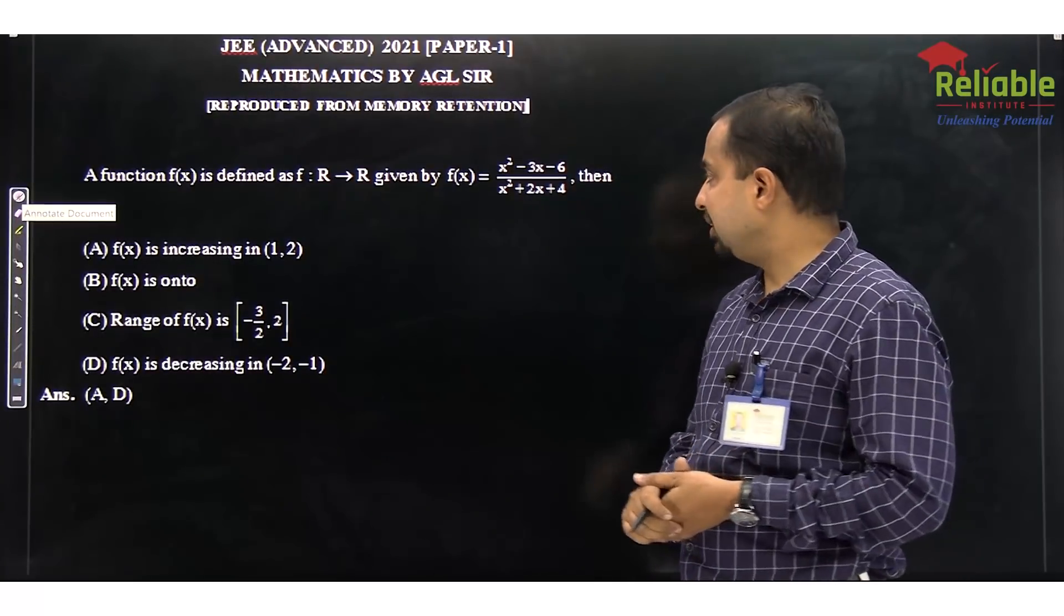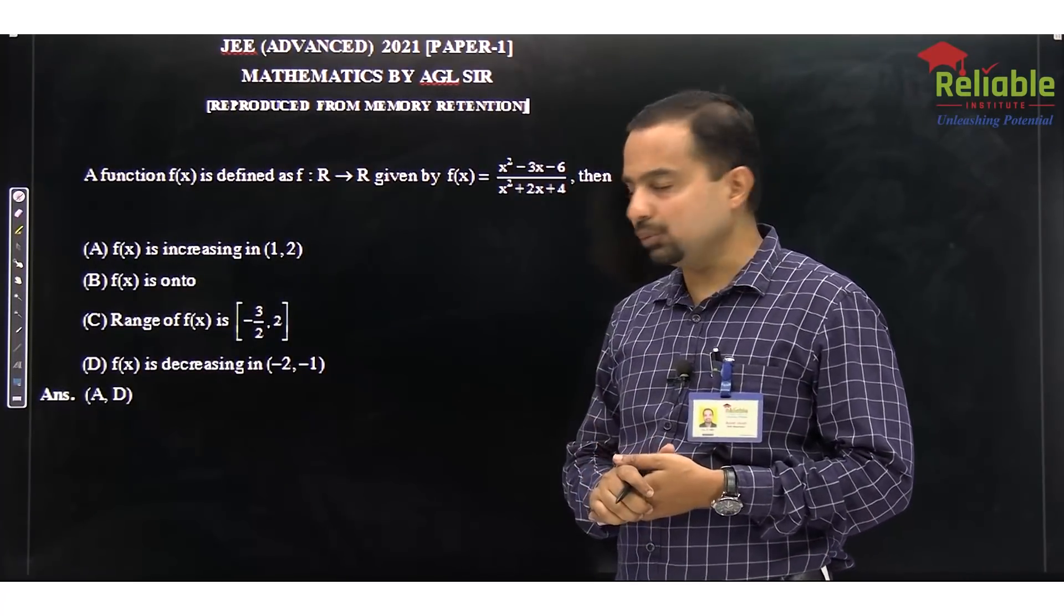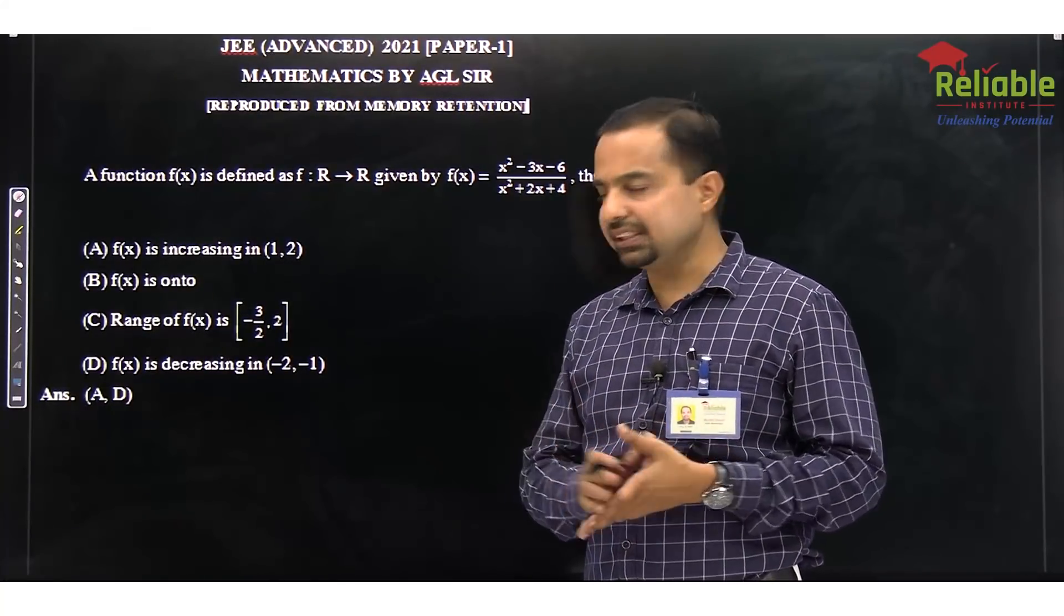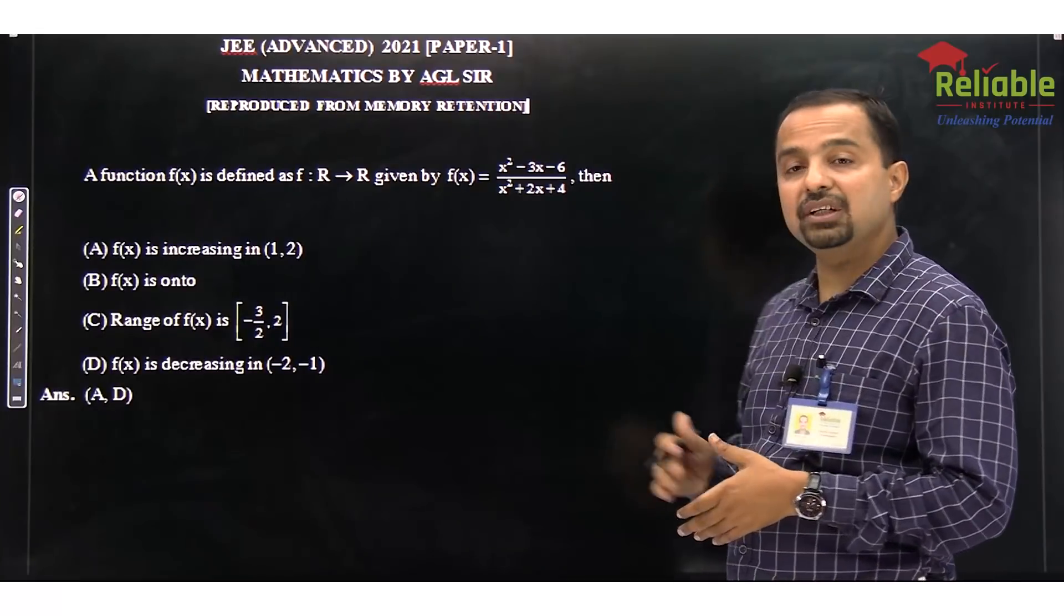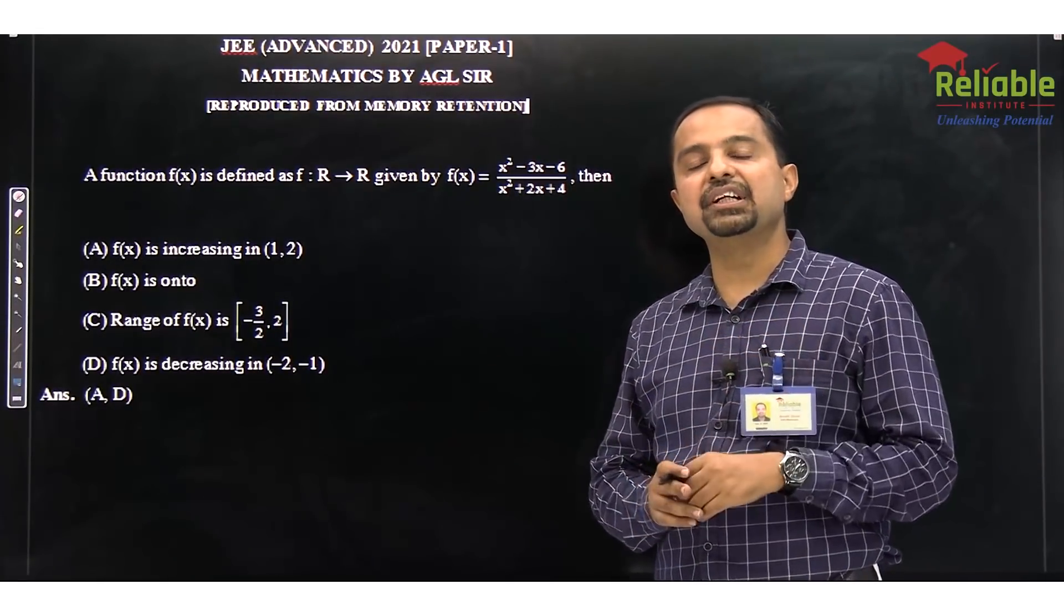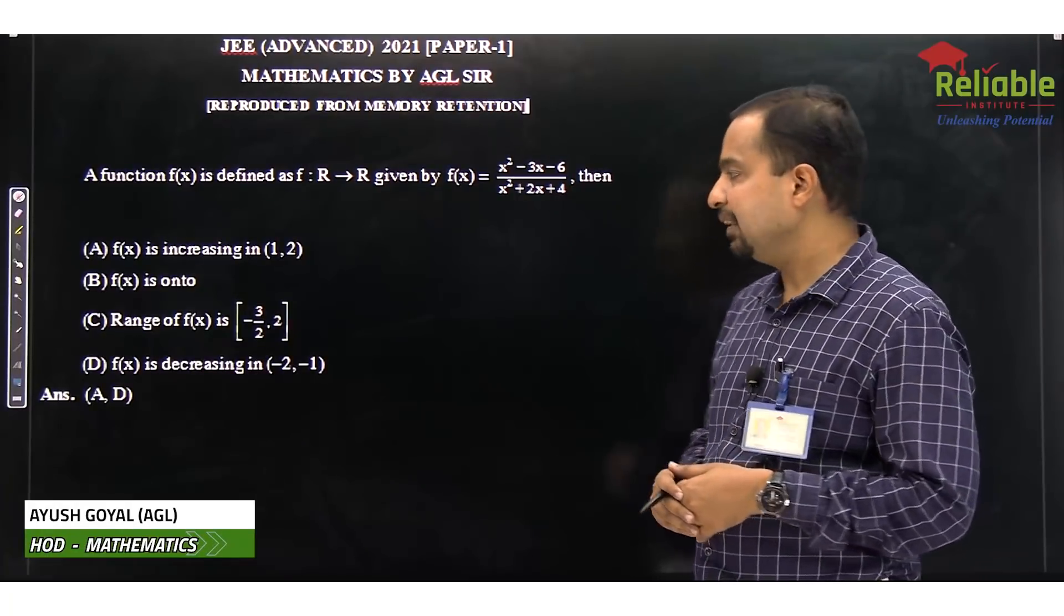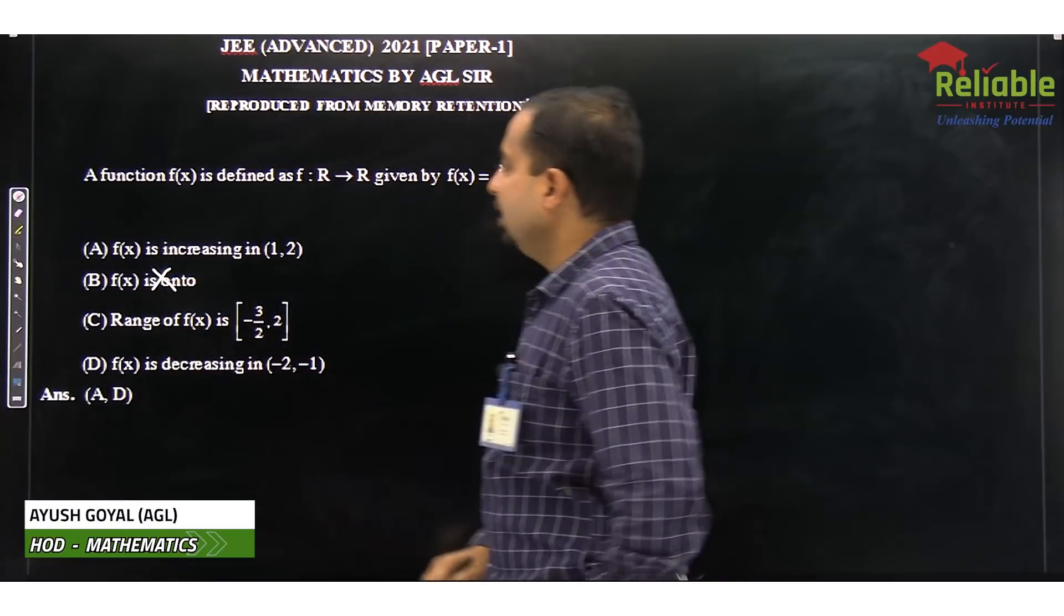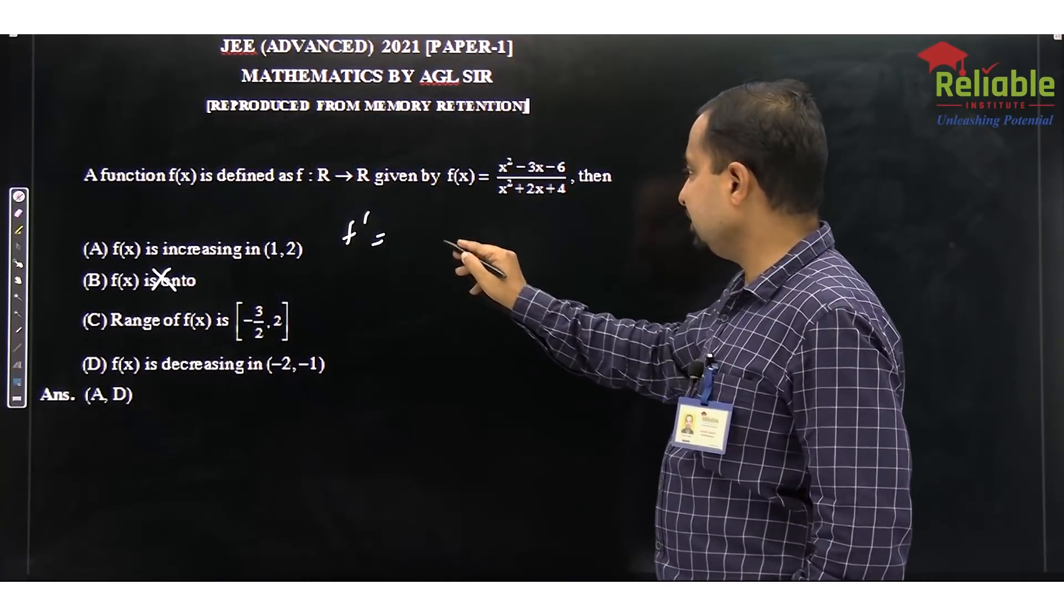The third question, this is quadratic by quadratic. And multiple-choice question was asked: increasing-decreasing range. These are all related to differentiation. fx onto, we can directly do this because the discriminant of denominator is negative. If the discriminant of denominator is negative, it cannot go to 0. Hence, it will not be able to shoot up to infinity. Hence, we can say that onto is wrong. Now, let's talk about increasing-decreasing. Let's talk about f'. Let's start with derivative.